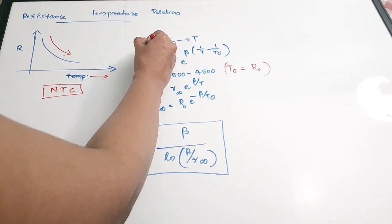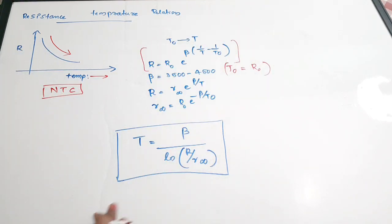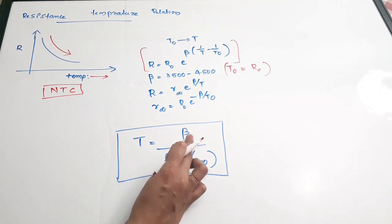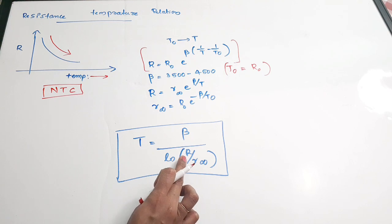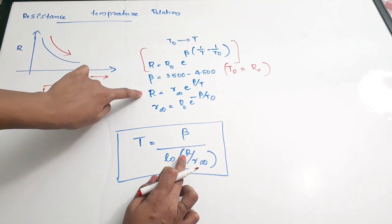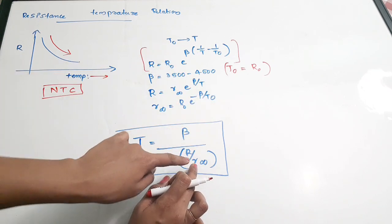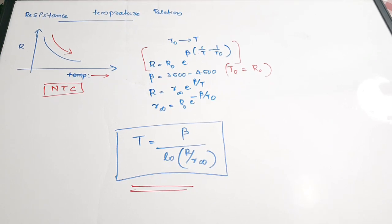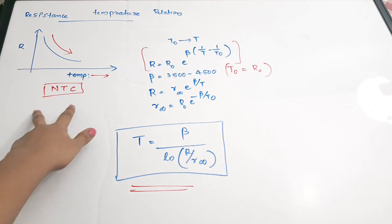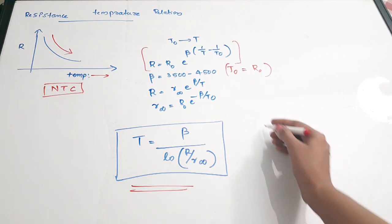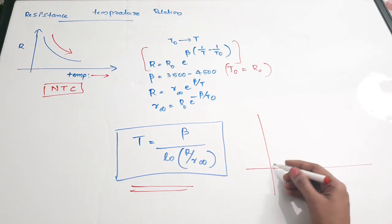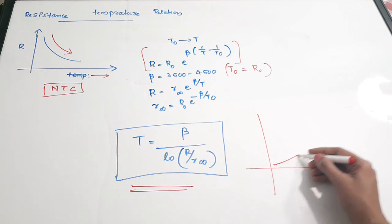This is the important relation. To express temperature, the equation is T = β / ln(R / R∞). This is the relation between temperature and resistance for a thermistor with negative temperature coefficient of resistance.